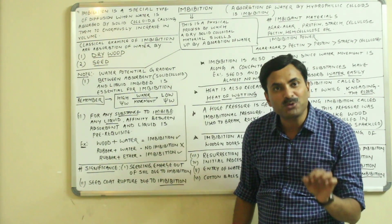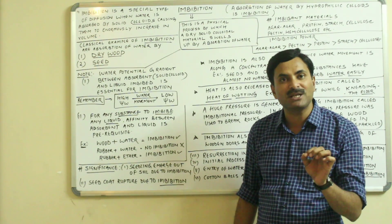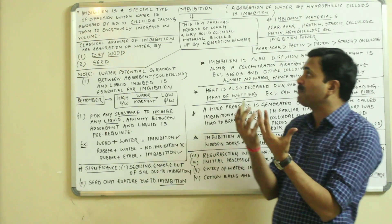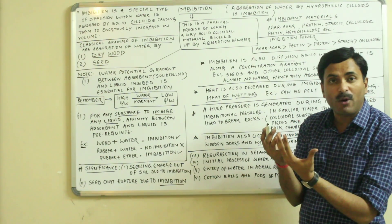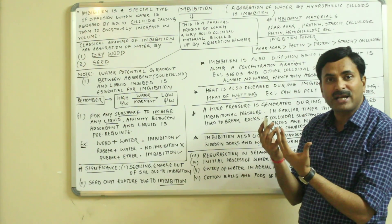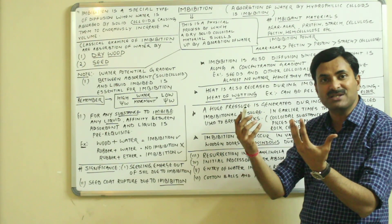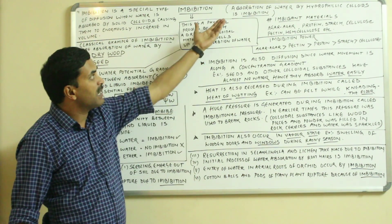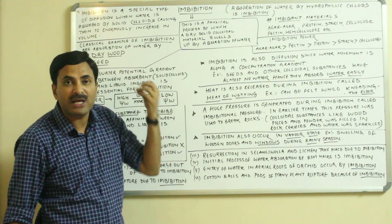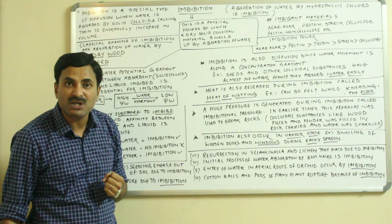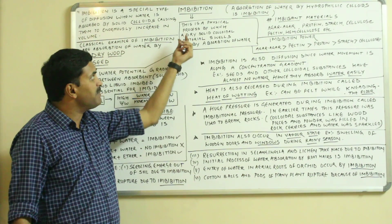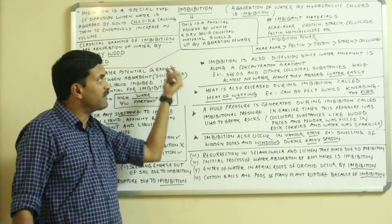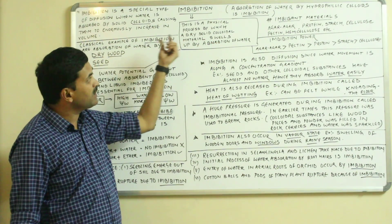Hello to all. Today we are discussing an important topic of plant physiology — imbibition. Imbibition is a special type of diffusion when water is absorbed by solid colloidal substances, due to which their volume is increased. We can also define imbibition as the absorption of water by hydrophilic colloidal substances, or as a physical process by which a dry solid colloidal material swells up because of the absorption of water.